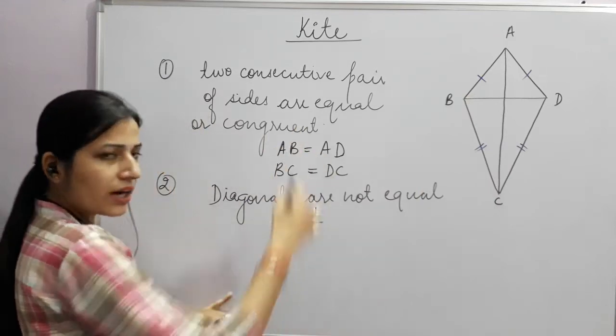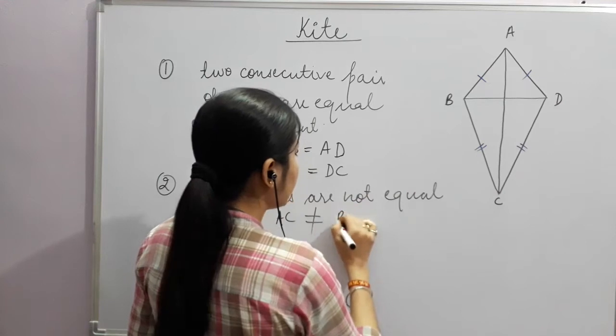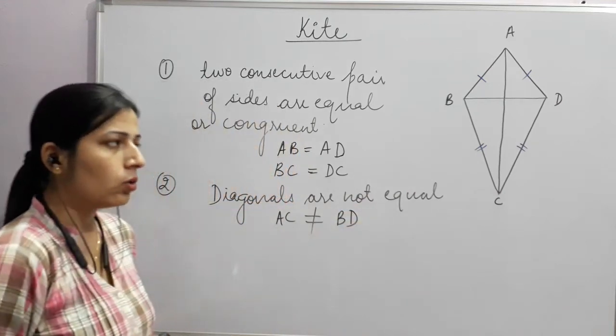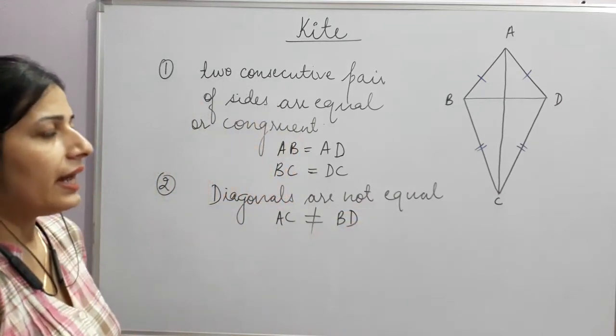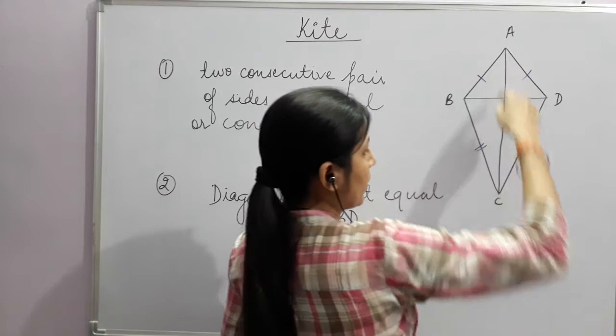AC and BD are not equal to each other. However, diagonal AC does bisect BD.